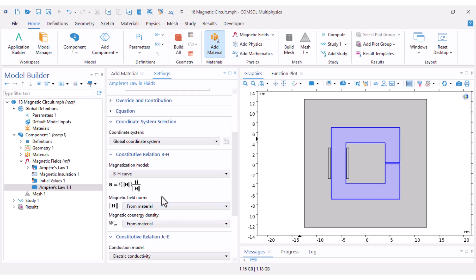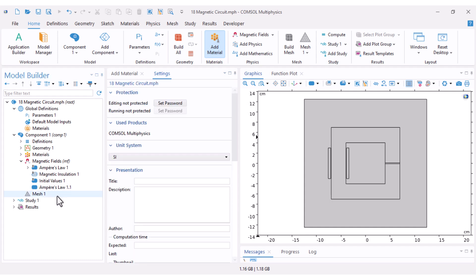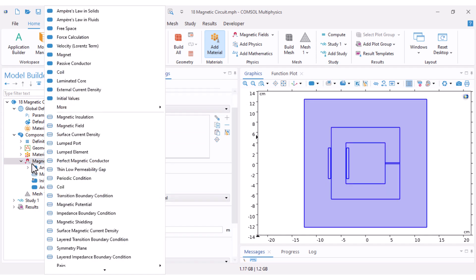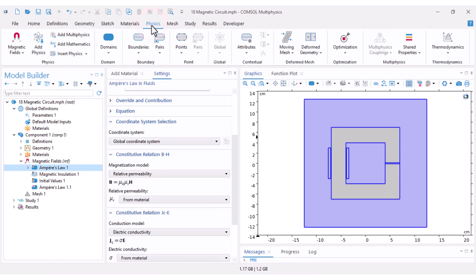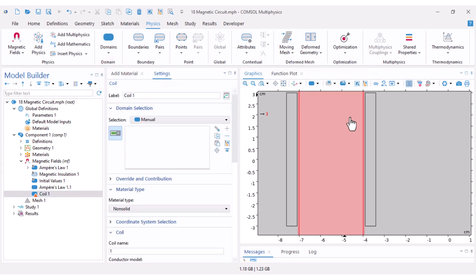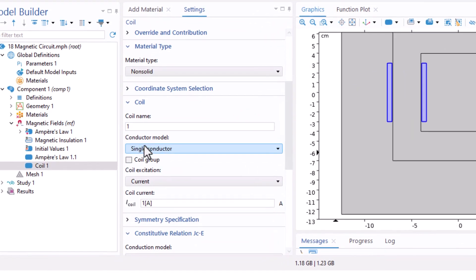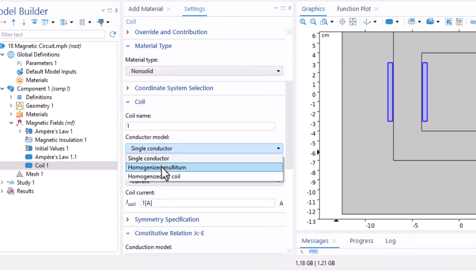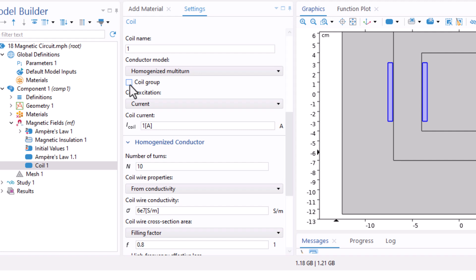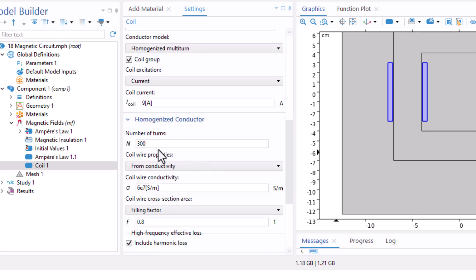Now we add the coil option. You can right click to add a coil or come here under physics domains and add a coil. I select my coil regions, then change the conductor model to homogenized multi-turn. I also check coil group because these two parts form a single winding.